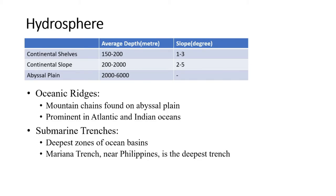Next relief feature is oceanic ridges. These are the mountain chains which are found on the abyssal plain region of the ocean basin. These ridges are found both in the form of plateau with gentle slopes and mountains with steep slopes. These ridges are very prominent in the Atlantic and Indian Ocean.